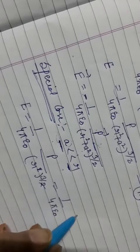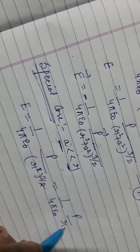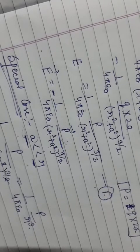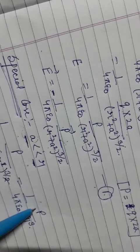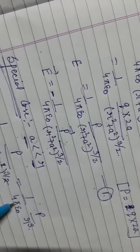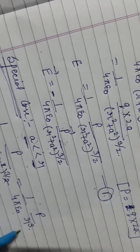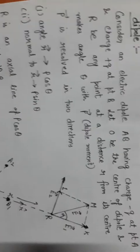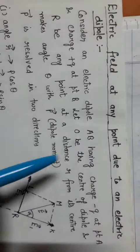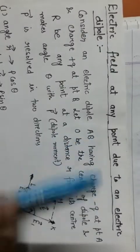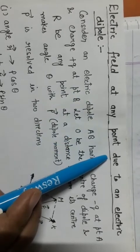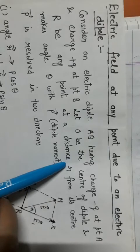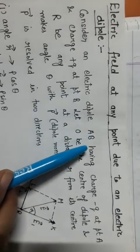Comparing with the axial line result: for the axial line it is 1 upon 4 pi epsilon times 2P upon R cubed, and for the equatorial line it is 1 upon 4 pi epsilon times P upon R cubed. The next topic is the electric field at any point due to an electric dipole — at any point means it may be on the axis or at any angle to the dipole.